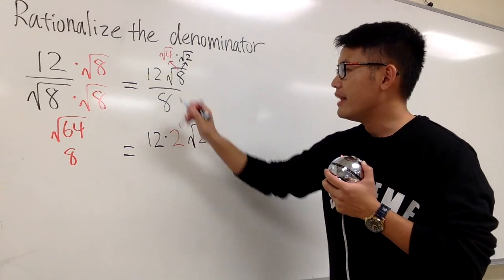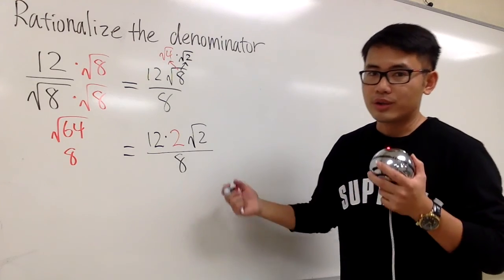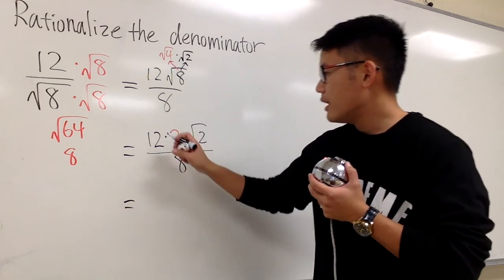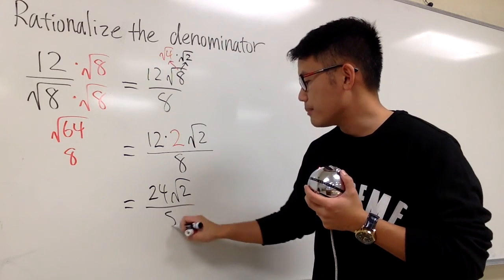So, let's write it down. And then, all over the 8 right here. And let's just work it out really quick. 12 times 2 is 24. And then we have the square root of 2 over 8 in the bottom.